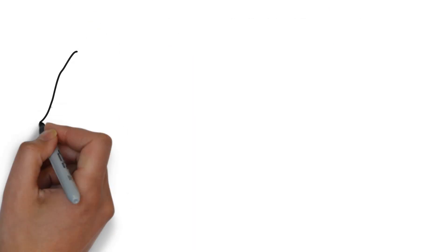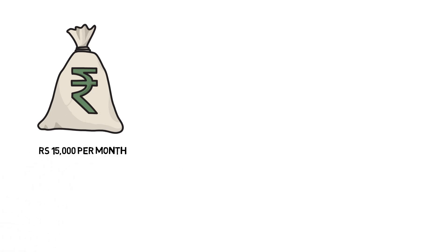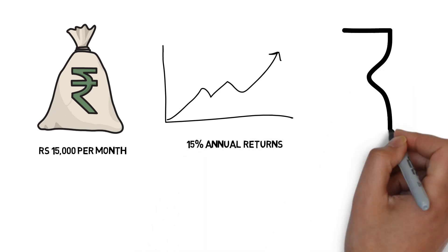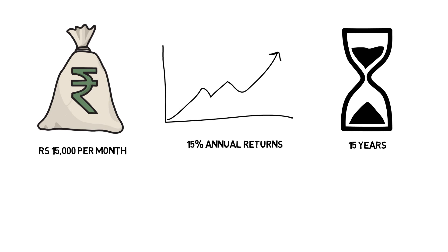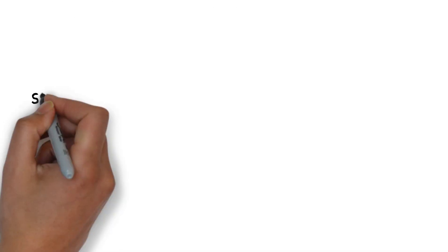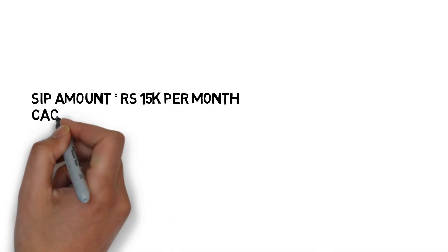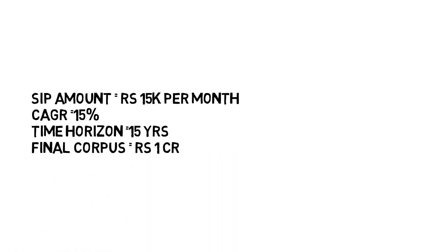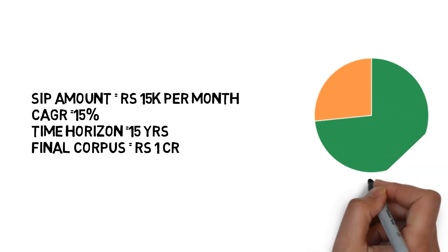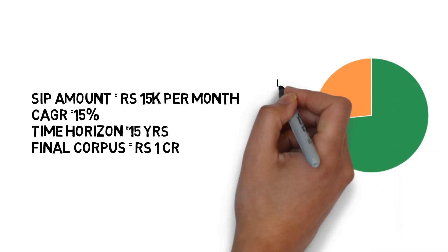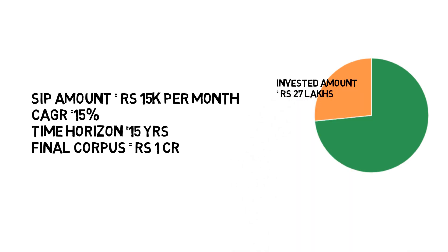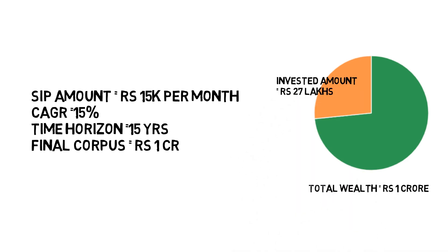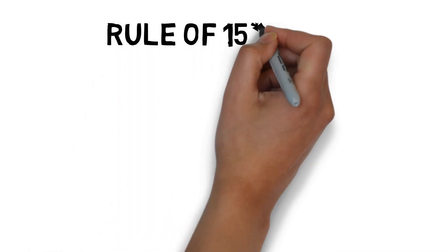The rule of 15x15x15 says that if you invest Rs 15,000 per month in an investment option which gives a return of 15% annually for a consistent period of 15 years, you can build a final corpus of Rs 1 crore. Your SIP amount is Rs 15,000 per month, your CAGR (compounded annual growth rate) is 15%, your time horizon is 15 years, and the final corpus is Rs 1 crore. Interestingly, your total invested amount is equal to just Rs 27 lakhs, however over 15 years you will build a total wealth of Rs 1 crore.